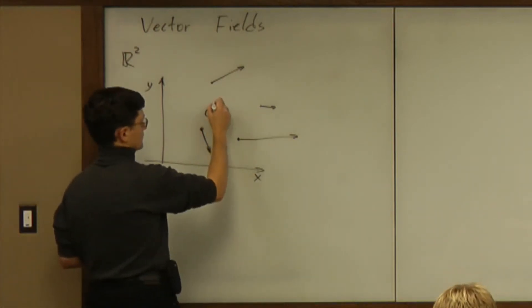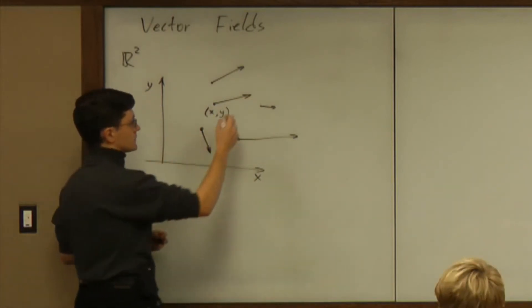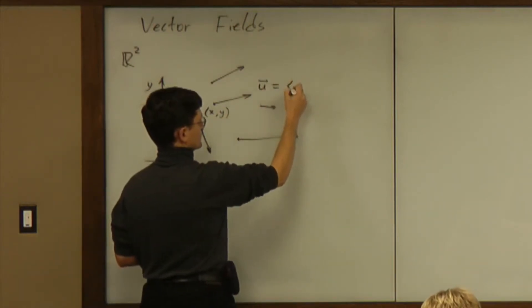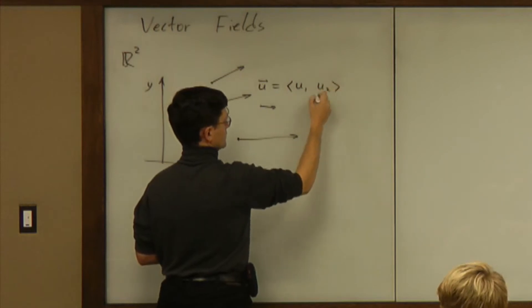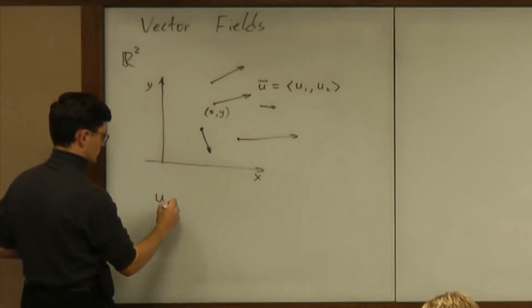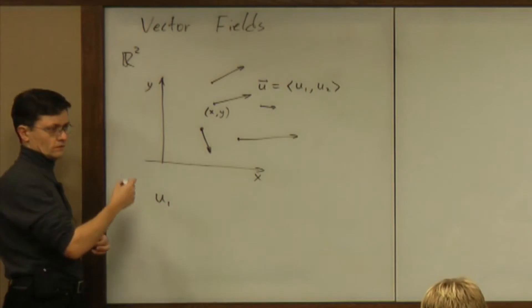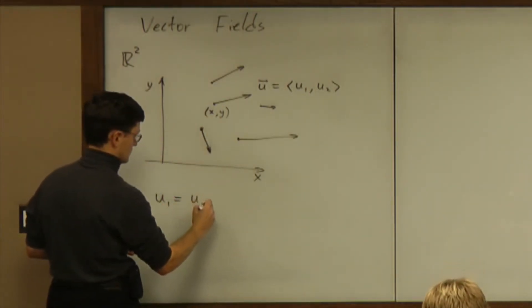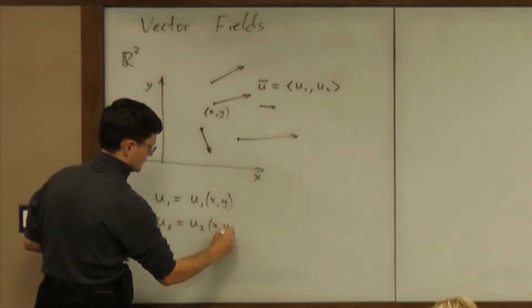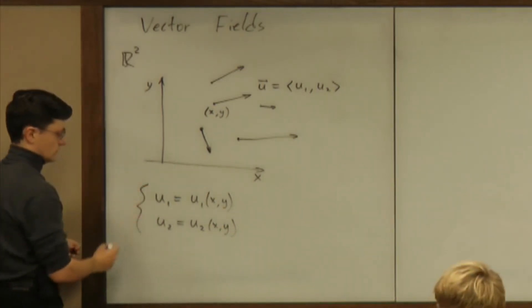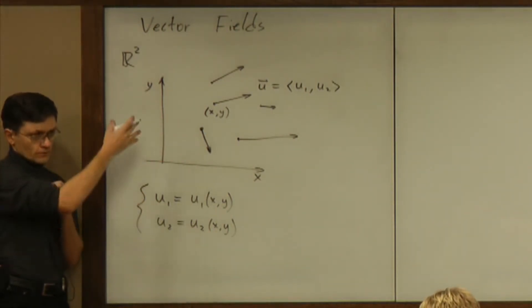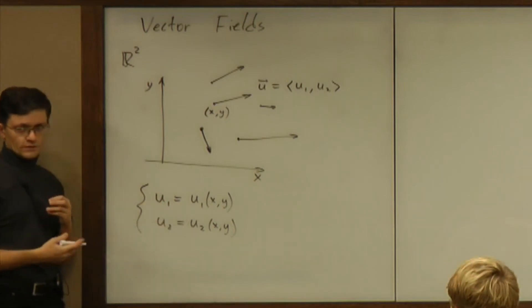A vector at that point also has coordinates. If you call this vector u, then it has coordinates u1 and u2. The assignment of a vector to a point amounts to describing what u1 is as a function of x and y, and what u2 is as a function of x and y. So a system of two functions describes the vector field — this is a complete algebraic description of a vector field.